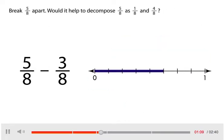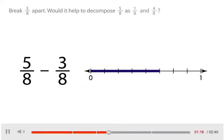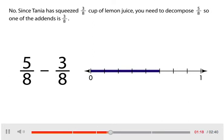Break 5 eighths apart. Would it help to decompose 5 eighths as 1 eighth and 4 eighths? Select your answer. No. Since Tanya has squeezed 3 eighths cup of lemon juice, you need to decompose 5 eighths so one of the addends is 3 eighths.